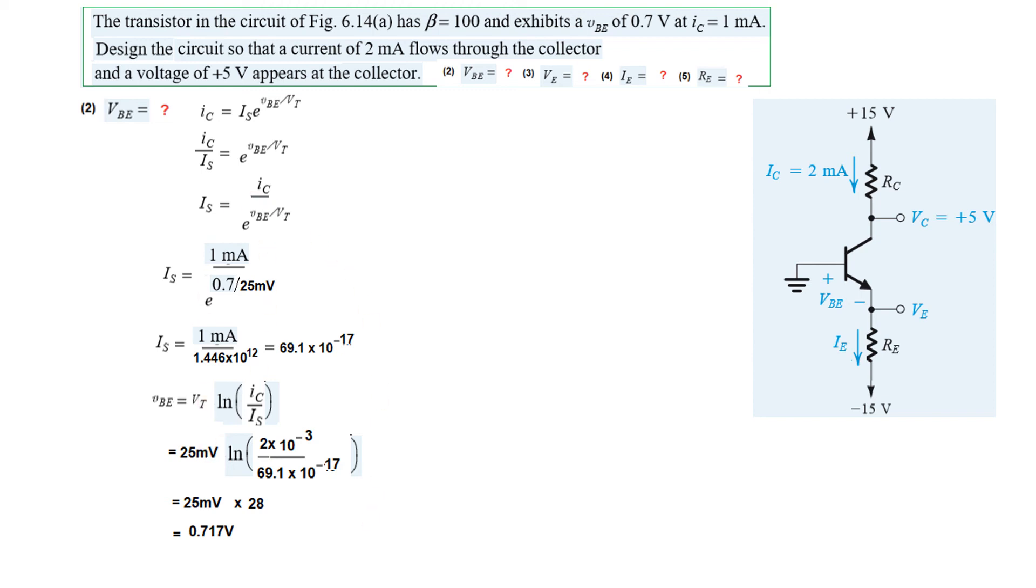We have found VBE. Now we have to find VE. Since this terminal is grounded, we'll have VBE the same value, but now sign will be opposite. Since the base is at 0 volt or grounded, the emitter voltage should be negative. VE is negative 0.71 volt.